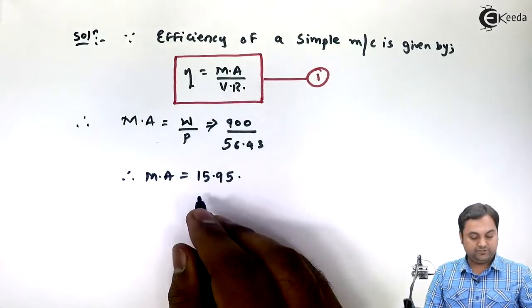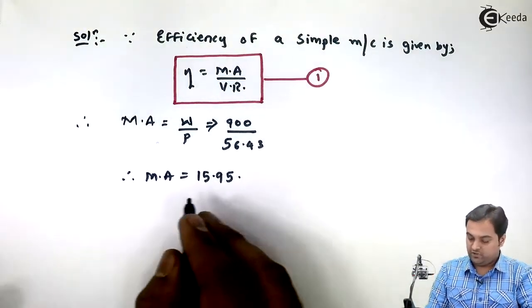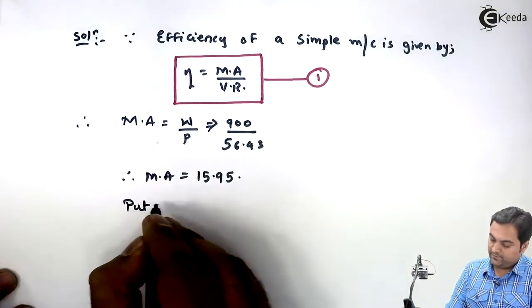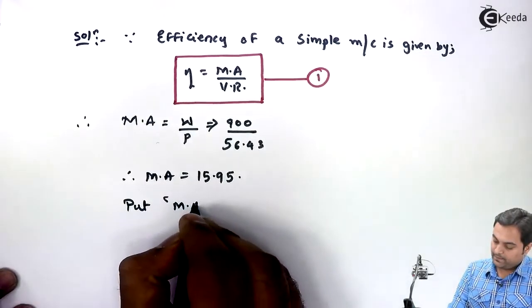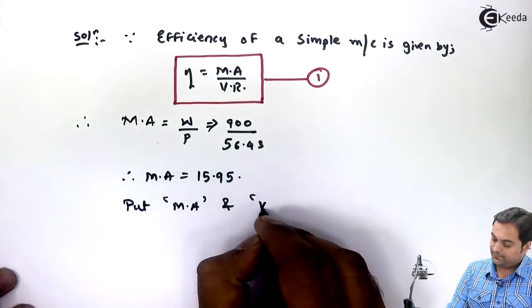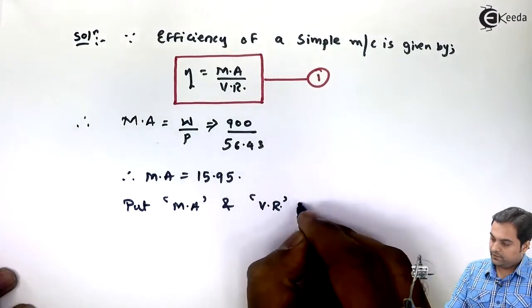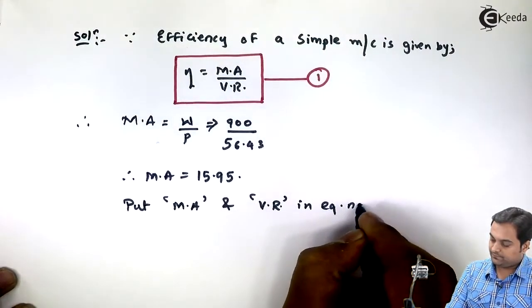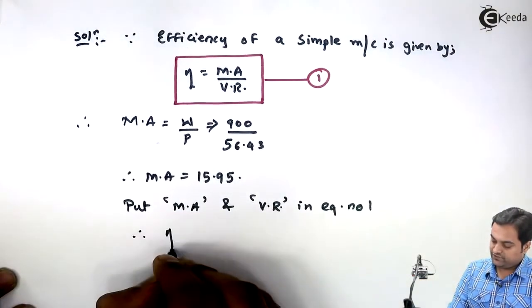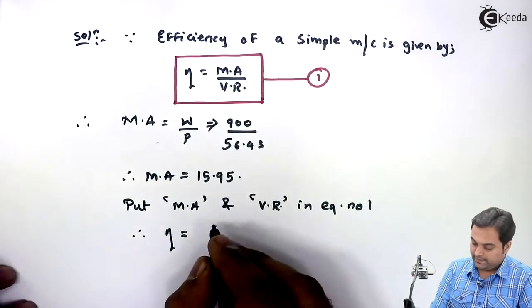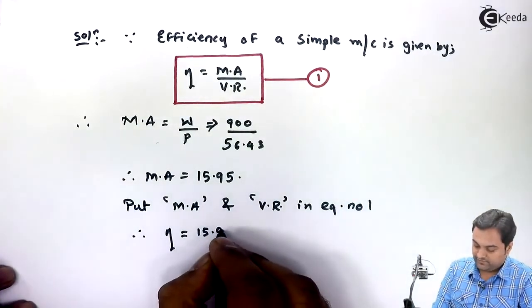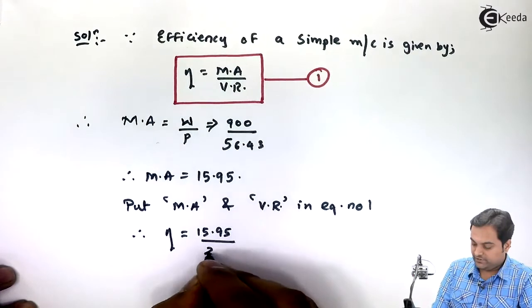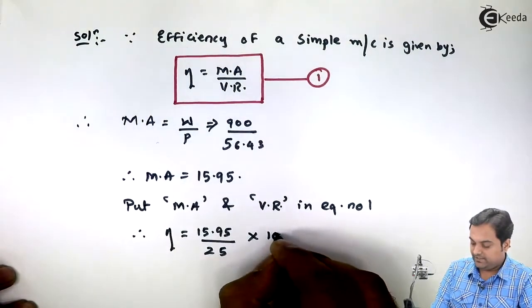So I'll say that: put MA and VR in equation number one. Therefore, efficiency will be equal to MA is 15.95, VR is 25. I'll multiply them by 100 to get the answer of efficiency in terms of percentage.